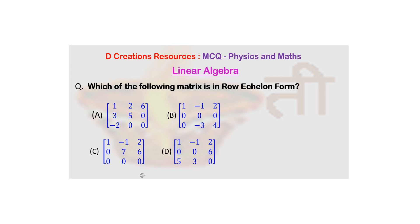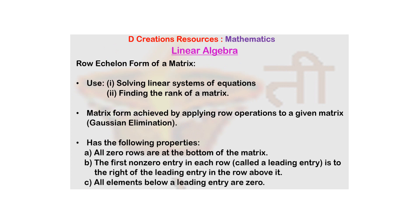Now we had long back learnt about row echelon form. If you have forgotten it, let's have a quick look at it. So we know that row echelon form of a matrix is used for solving linear systems of equations and finding the rank of the matrix. And basically we do row operations, Gaussian elimination, to get the matrix in row echelon form.